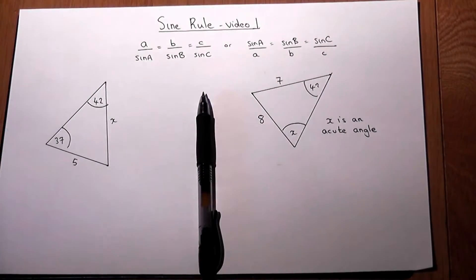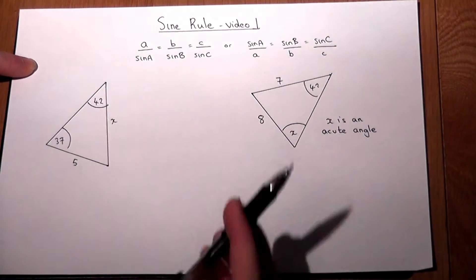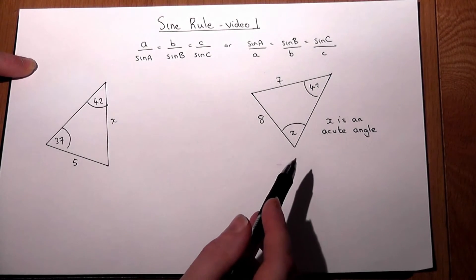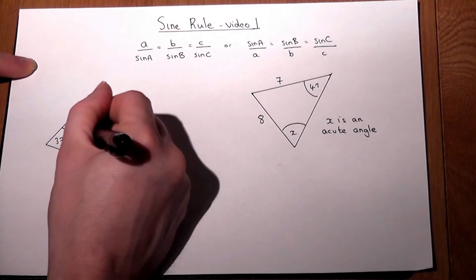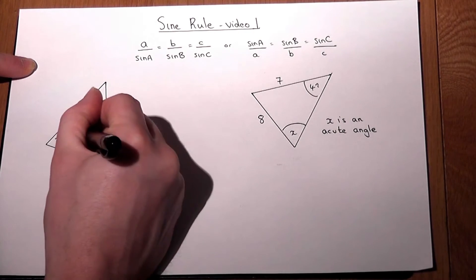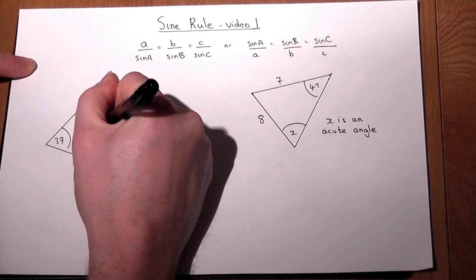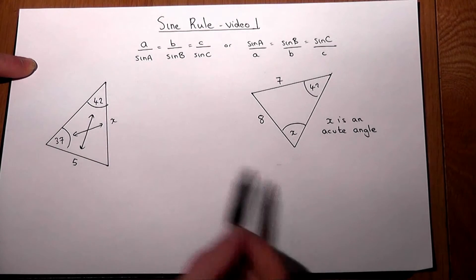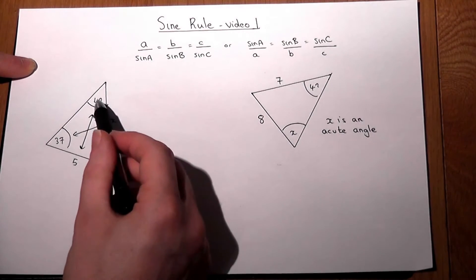This video talks through using the sine rule and shows two basic examples. The sine rule is used where we have angles and sides which are opposite each other. In the first triangle, these pair off - the X and the 37 degrees, the 5 and the 42 degrees.